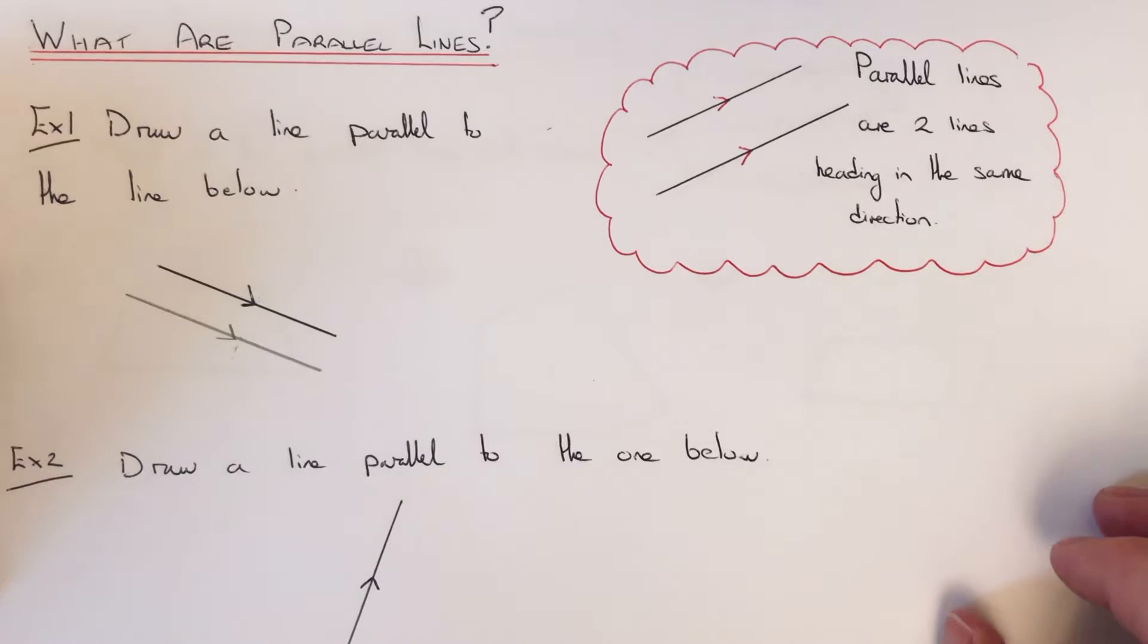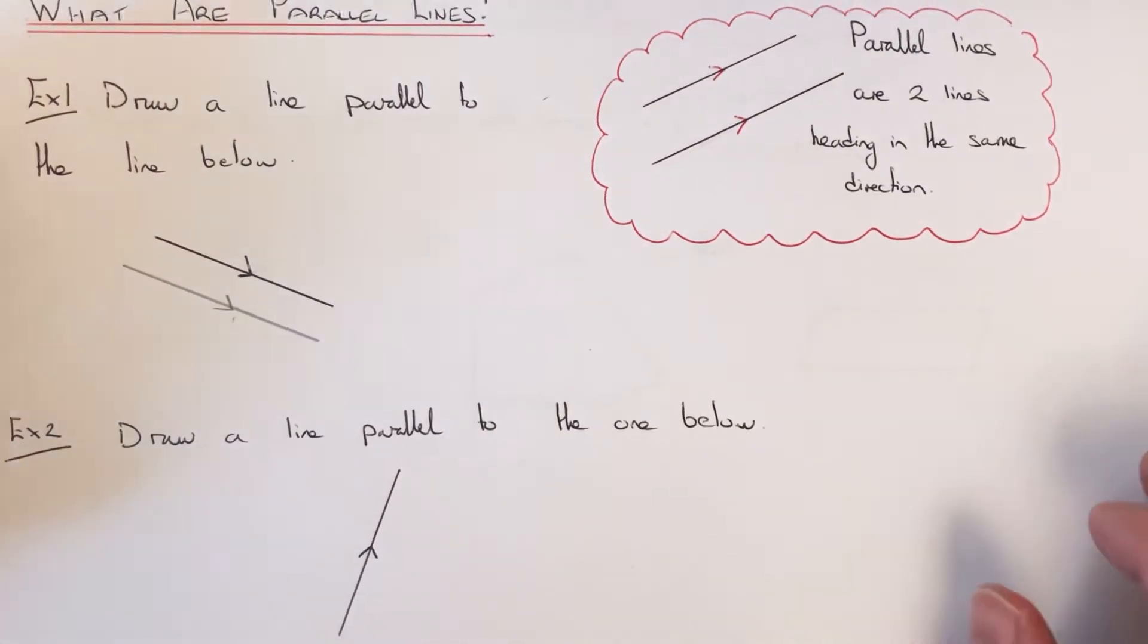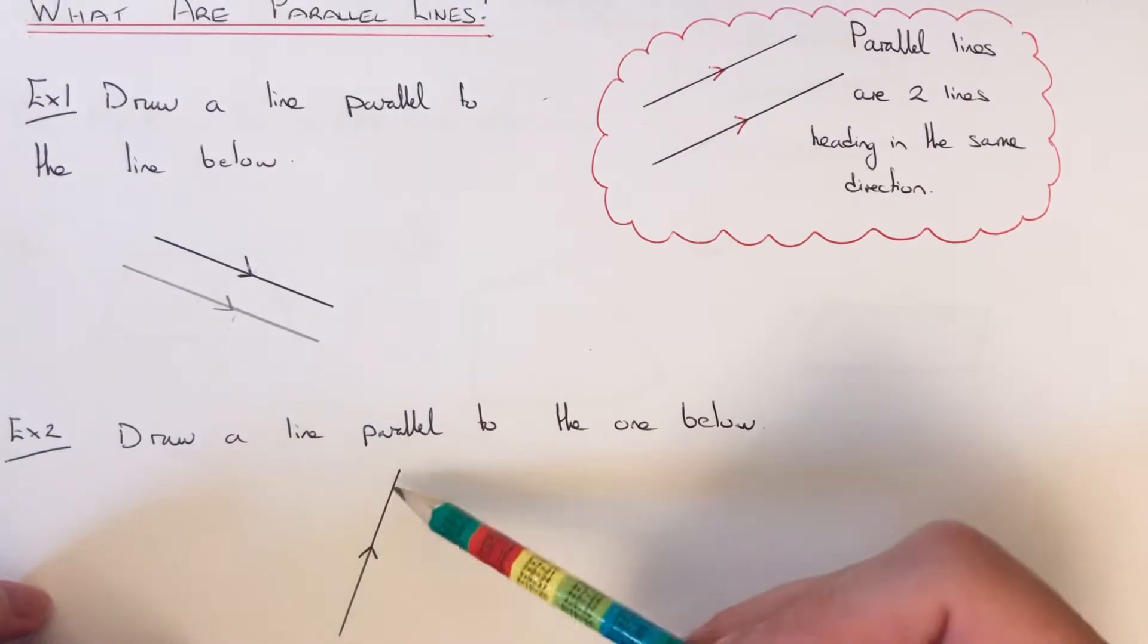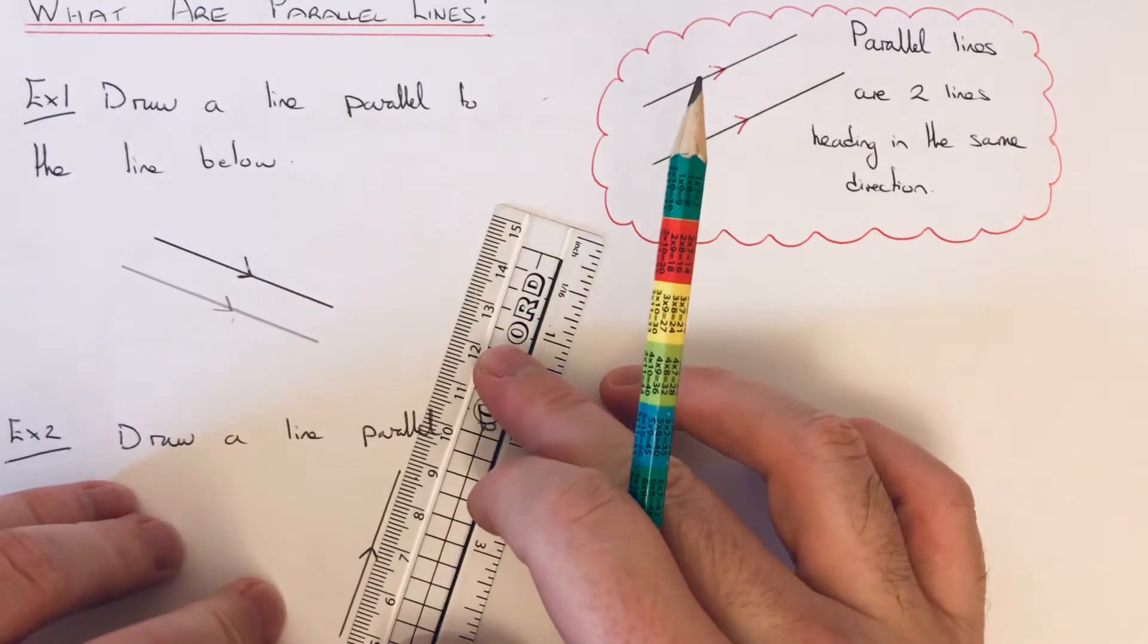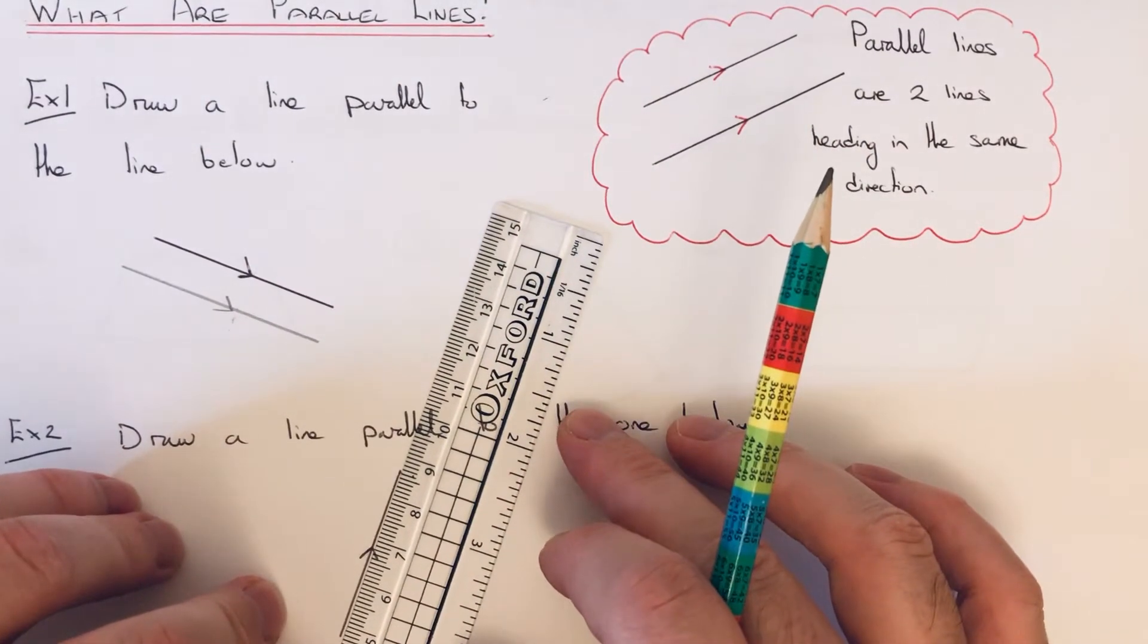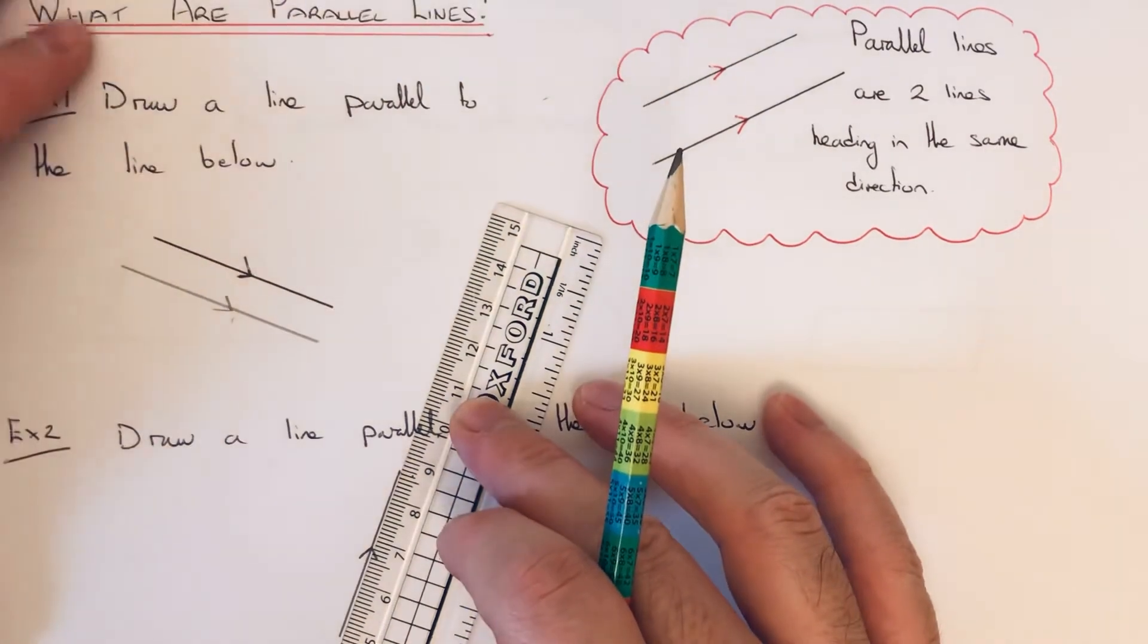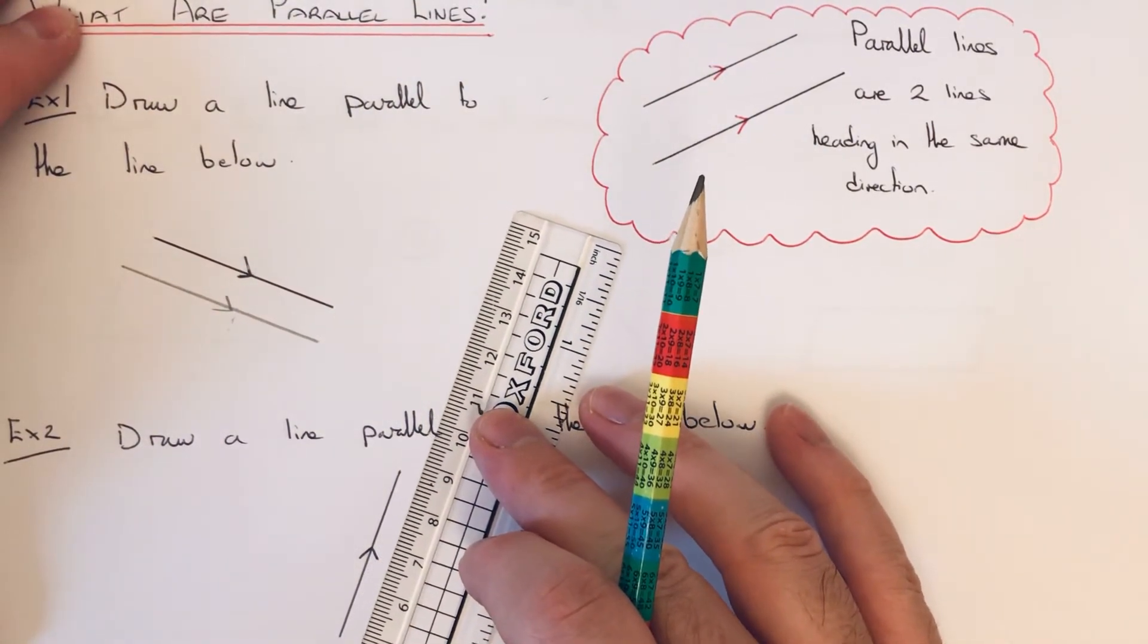So let's move on to the second example. We've got to draw a line parallel to this one here. So again, if you get your ruler, put it along the first line. If we just move our ruler slightly away from the first line, keep it in the same direction.